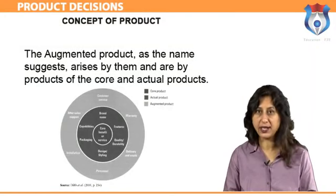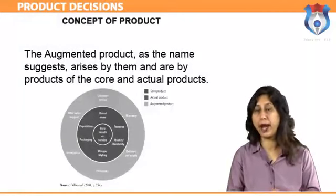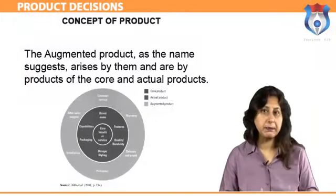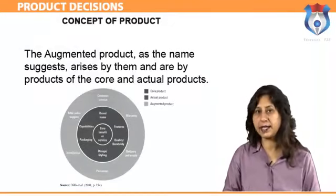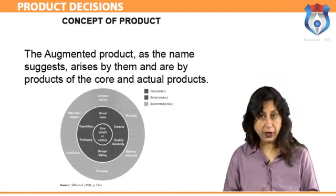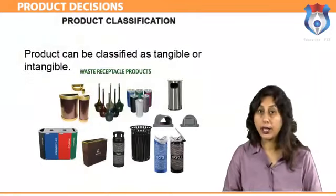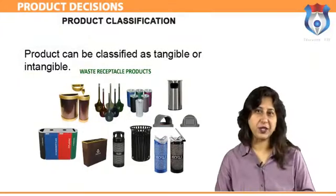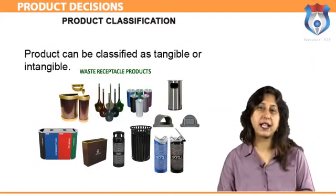The augmented product, as the name suggests, arises from and is a by-product of the core and actual products. These might be complete products within themselves. Taking the example of manufacturing a car, it needs regular servicing, warranty, and so on.